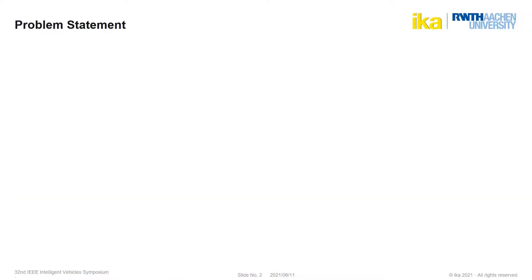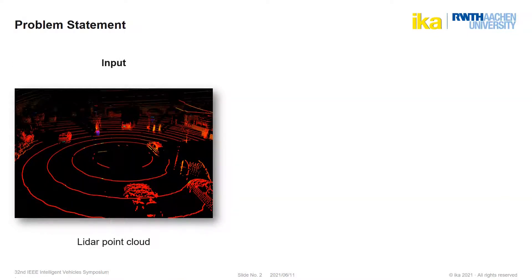Let me first introduce the problem statement. Today's prototypes of automated vehicles often use LiDAR sensors in addition to cameras and mostly also radar sensors to perceive their environment. While cameras provide semantic information and radars allow measuring the speed of other traffic participants, a LiDAR sensor scan provides 3D locations of elements in the environment with highest accuracy even at night. Other traffic participants are often represented as bounding boxes and object lists used to predict their future behavior and plan the maneuver of the automated vehicle.